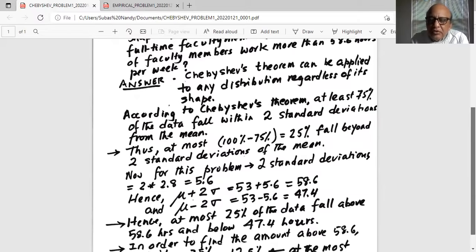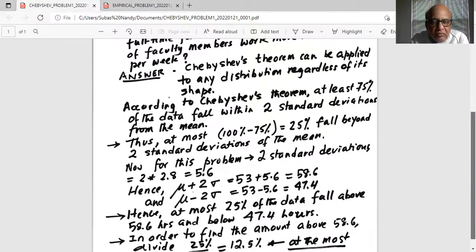Hence, at most 25% of the data fall above 58.6 hours and below 47.4 hours. Why? Because at least 75% of the data fall between 47.4 and 58.6 hours. So, what is left from 100%, 100 minus 75 is 25. So, at most 25% fall above 58.6 or below 47.4.